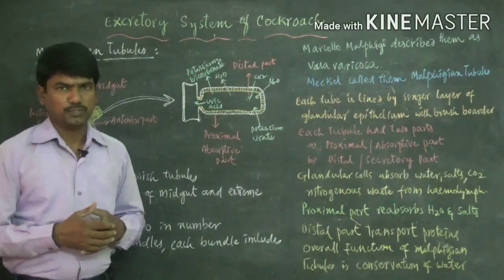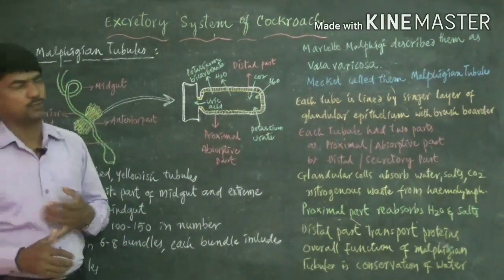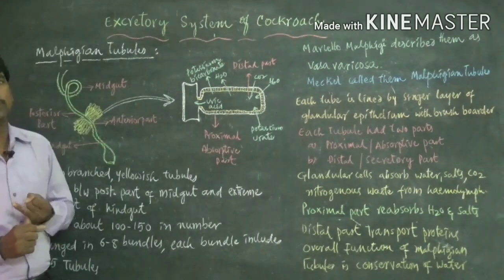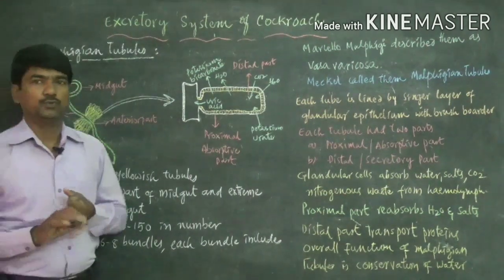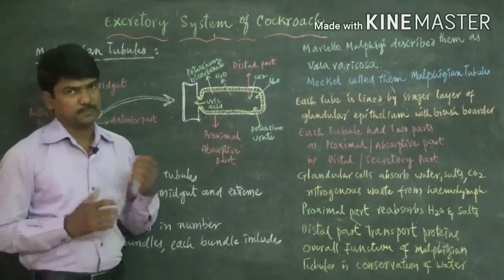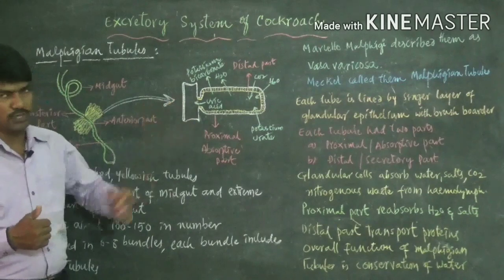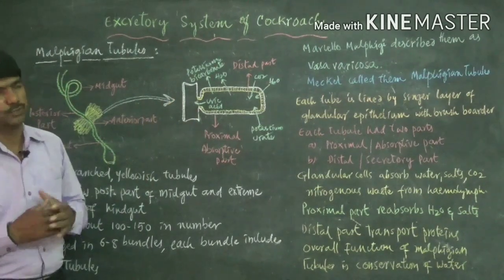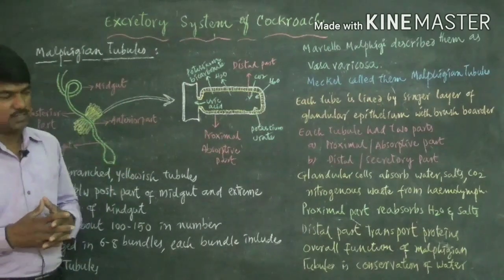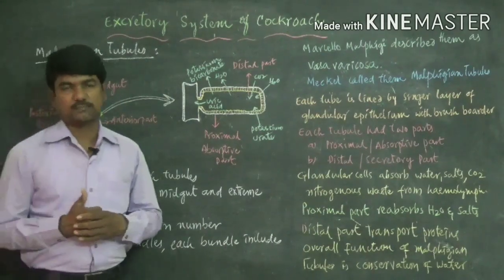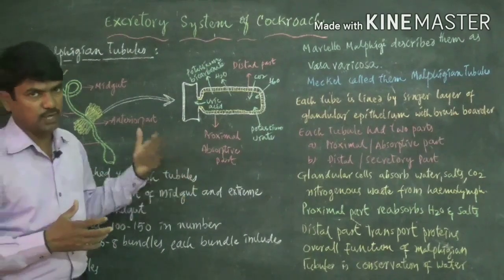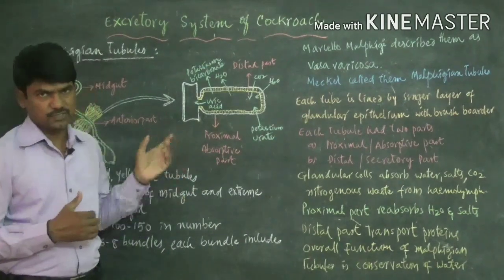The excretory system of cockroach includes various components: Malpighian tubules, fat bodies, uricose glands, nephrocytes, and the cuticle. Different characters participate in the excretion of cockroach. Excretion means removal of nitrogenous waste material from the body of the cockroach.